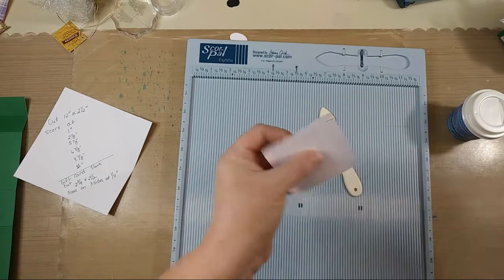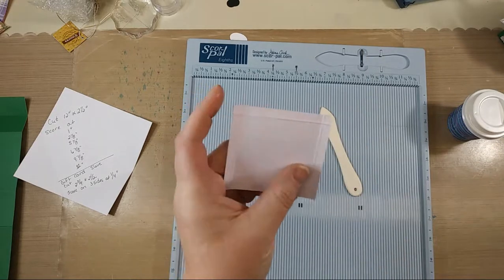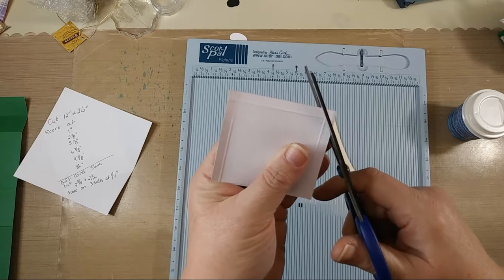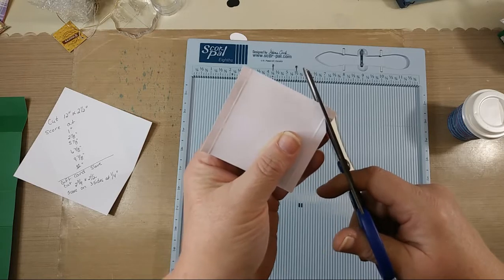So then I just kind of fold them all in. Now a little trick to this so things fold in nicely is you're going to trim away the corners, so those sides are going to fold in really nicely.